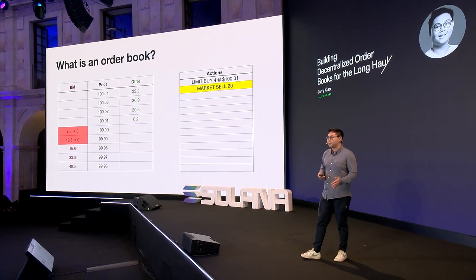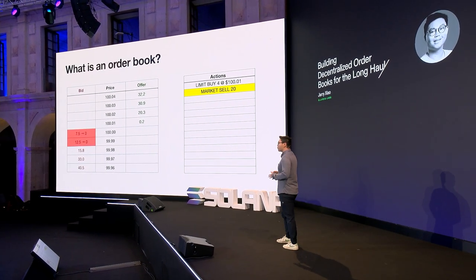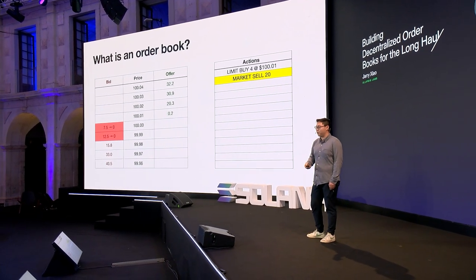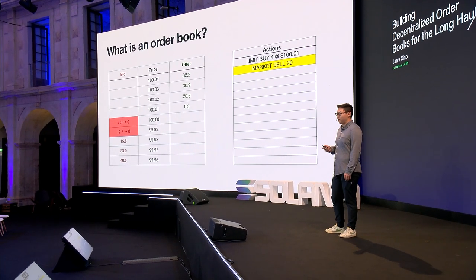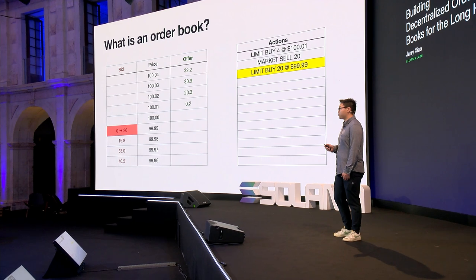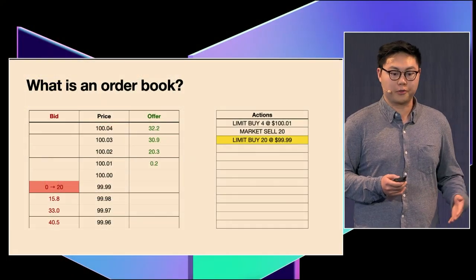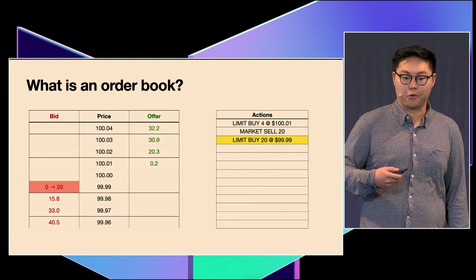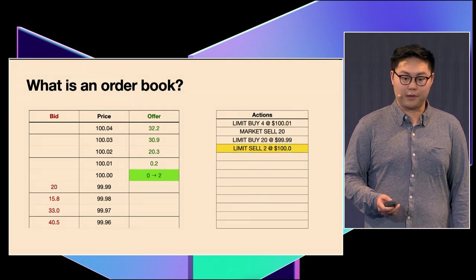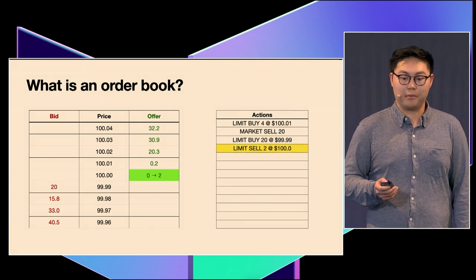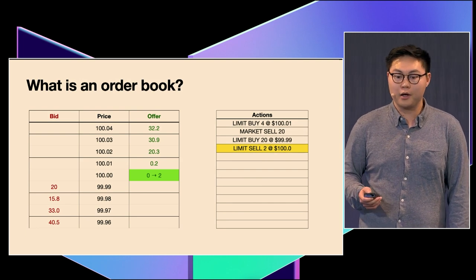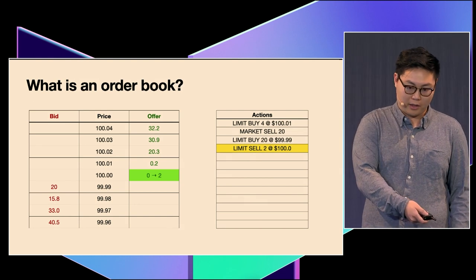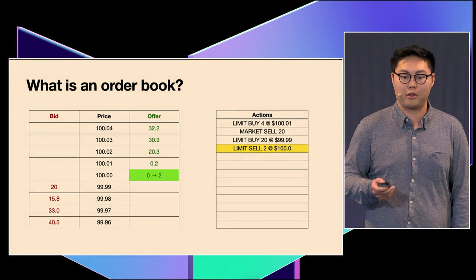You can also sell. In this case, it's a market sell. What a market sell means is there's no price associated with the order, and instead you'll get immediately matched with anything on the bid side of the book. Here we see that 20 orders were moved on two levels of the bid. You can also post liquidity by posting limit orders. Here's a limit order to buy 20 at $99.99, which will add a new order to the bid, now at the top of the book. The same thing with limit selling — two orders posted on the offer side for $100. Notice that it does not result in a trade because the price listed is higher than the best bid on the book.